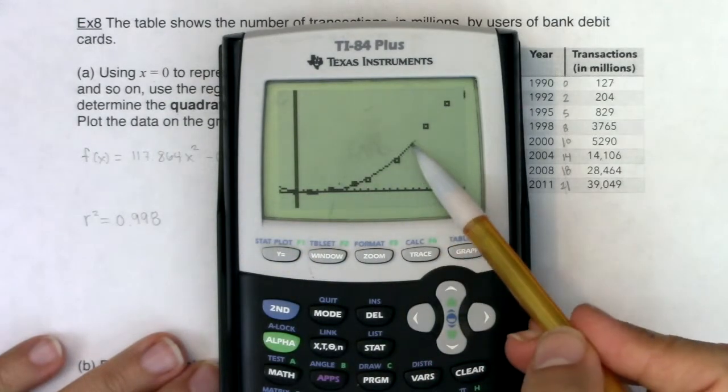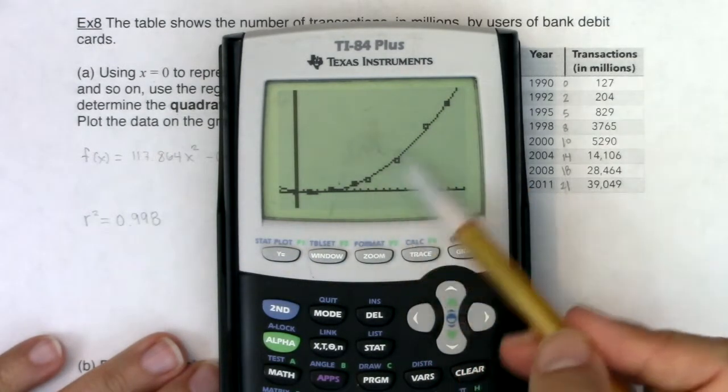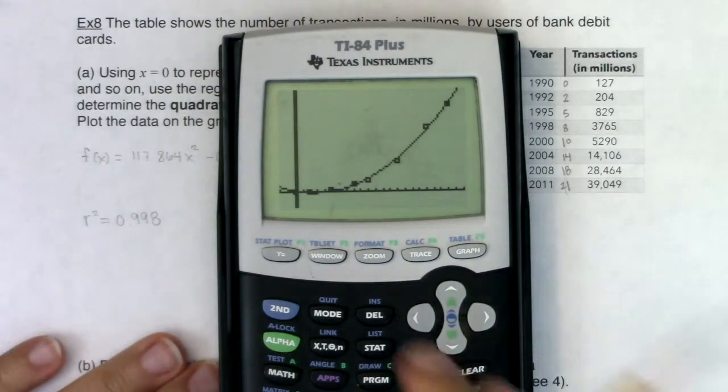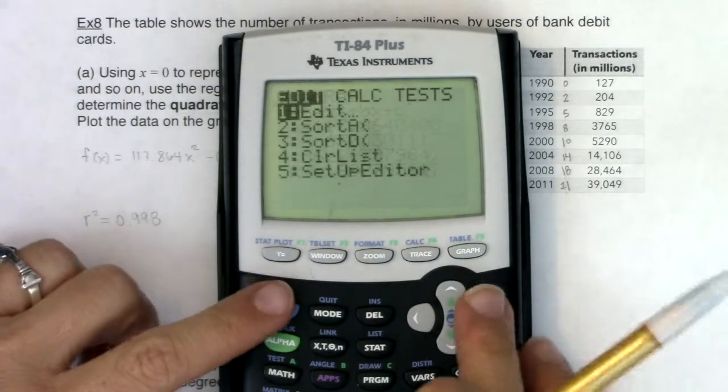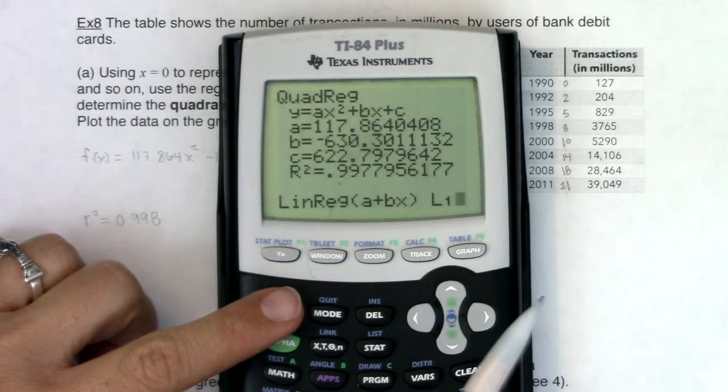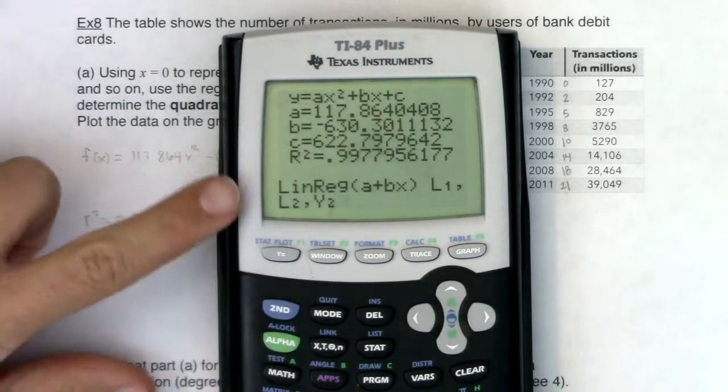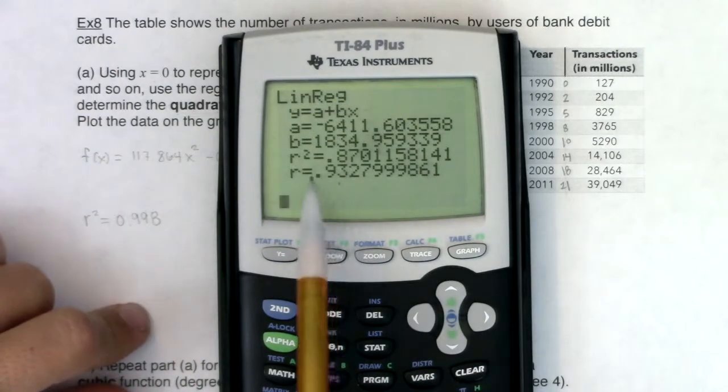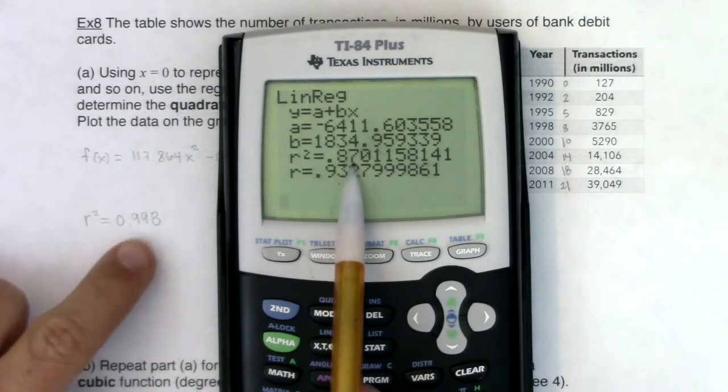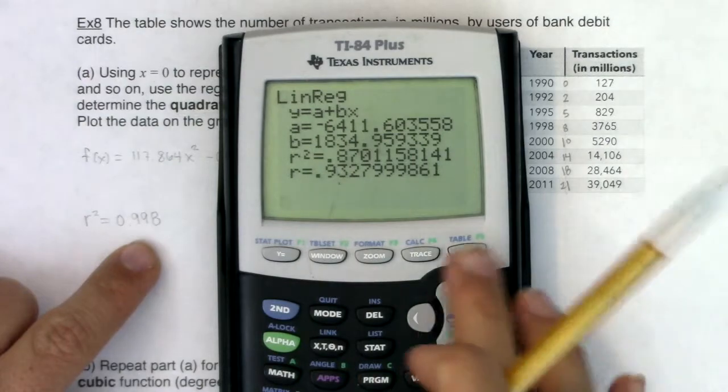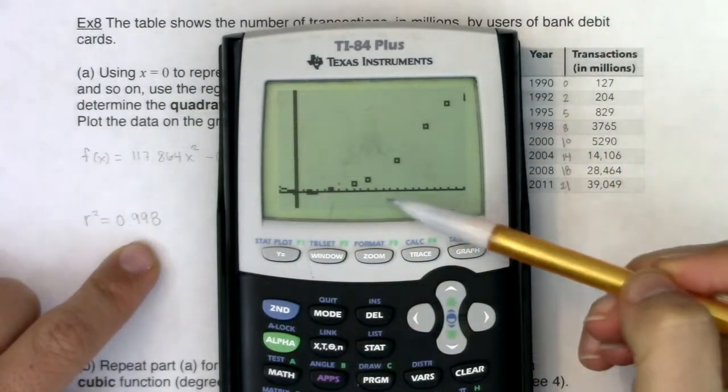Back when we were doing linear regression, we kept track of that R value. Anytime you move past linear regression, meaning we're into quadratics, we measure or take note of the R squared number. If I did stat calc 8 for linear regression, I'll put this into y2 just so we can compare. Do you see the R squared is only 0.87? It's much lower than 0.998.